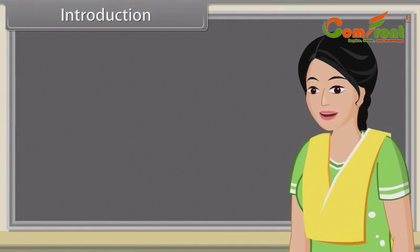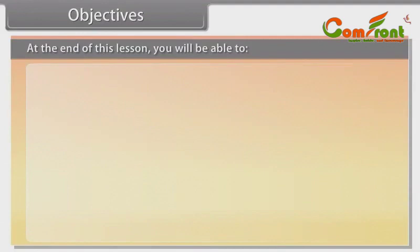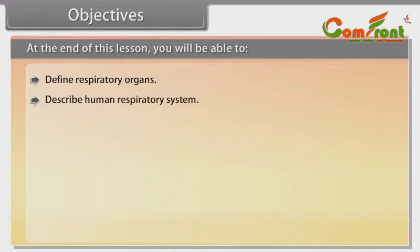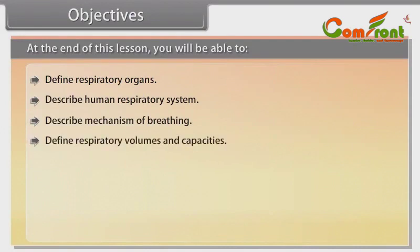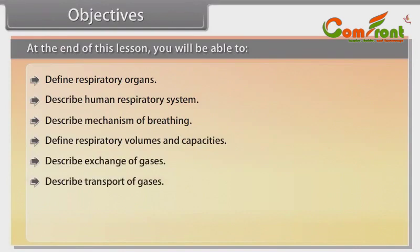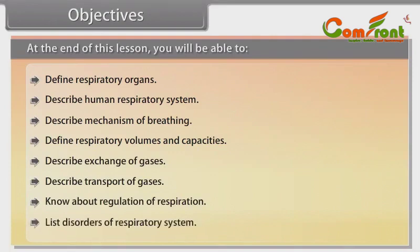In this lesson, you will learn breathing and exchange of gases. At the end of this lesson, you will be able to: define respiratory organs, describe the human respiratory system, describe the mechanism of breathing, define respiratory volumes and capacities, describe exchange of gases, describe transport of gases, know about regulation of respiration, and list disorders of the respiratory system.